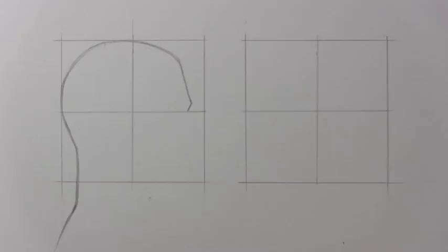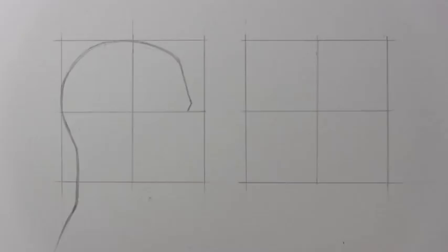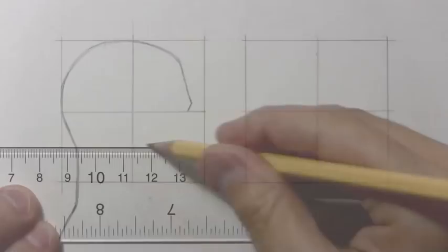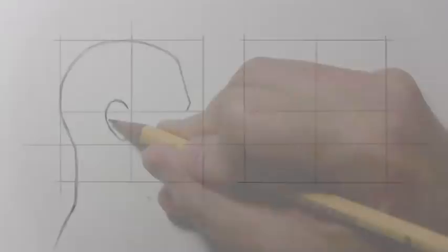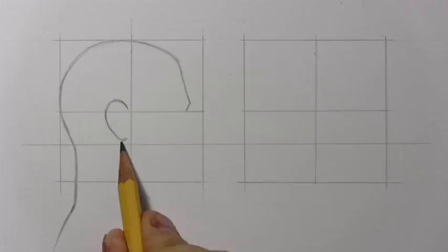Now, what I want to do is add one more guideline that's going to divide these bottom squares pretty neatly in half. You can see it's pretty much right between those two lines, maybe just a little touch closer to this center line than to the lower one. This one is going to help us figure out where to draw the nose, and then also for placing the ears. In fact, why don't I go ahead and draw the line for the ear right now.